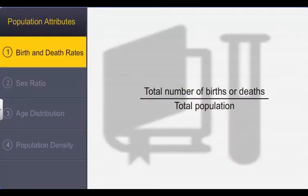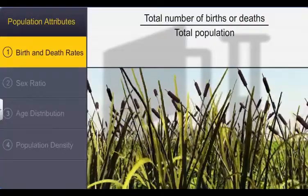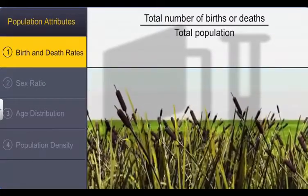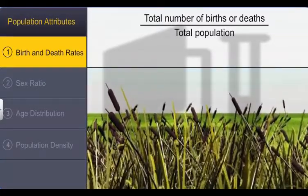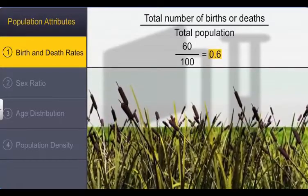Birth and death rates are expressed in terms of per capita — that is, by dividing the total number of births or deaths by the total population that exists in a given time period. For example, in a wetland, there were 100 taifa plants last year and 60 new plants are added, taking the current population to 160. The birth rate is measured by dividing the total number of births by the total population, which is 60 divided by 100, or 0.6 offspring per taifa per year.